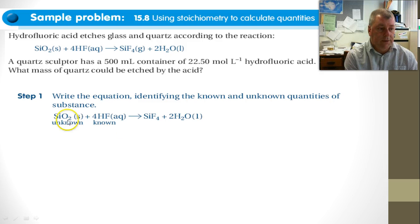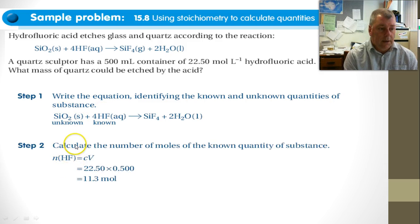So we've written the formula. We've identified our known and our unknown. Calculate the number of moles of the known substance. And so we've got a concentration, we've got a volume, but we must remember to convert it to liters. And so we actually have 11.3 moles of HF, hydrofluoric acid.